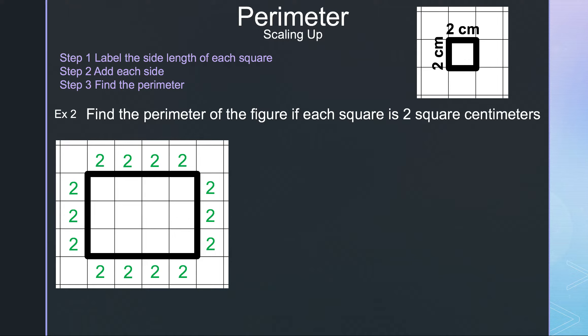The top is 4 twos which gives me 8. Working our way clockwise, there are 3 twos for the right which gives me 6, 4 twos for the bottom which gives me 8, and finally 3 twos for the left which gives me 6. Now we can add them all together.